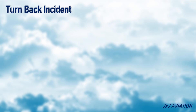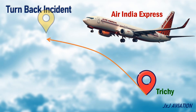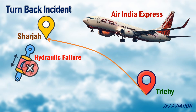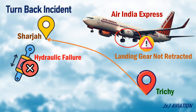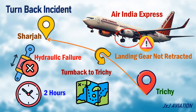First, let's look at a turn-back incident. An Air India Express flight, a Boeing 737, takes off from Trichy and is headed to Sharjah. Just after take-off, due to a hydraulic failure, the landing gear could not be retracted. So the crew decides to turn back to Trichy. The aircraft had to circle over Trichy for nearly two hours before making a normal landing at Trichy.